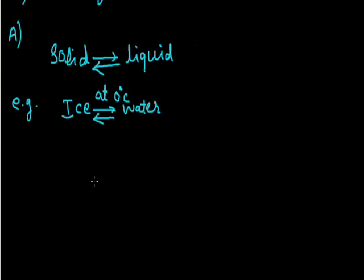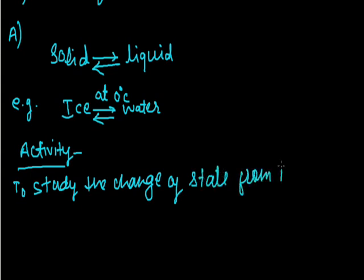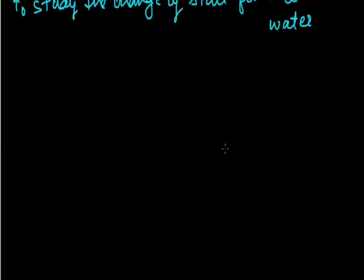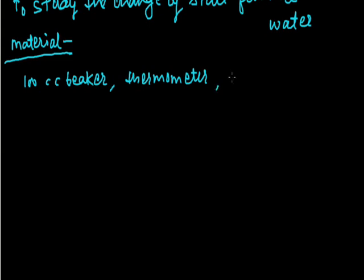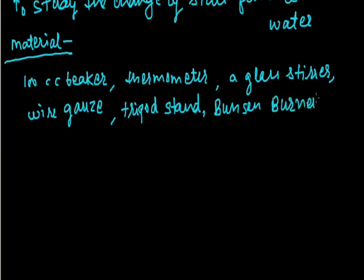Now regarding this we have to perform an activity. Our purpose is to study the change of state from ice to water. For this, the materials required are: a 100 cc beaker, a thermometer, a glass stirrer, a wire gauge, a tripod stand, a Bunsen burner, an iron stand, and ice cubes.